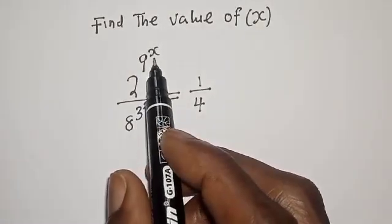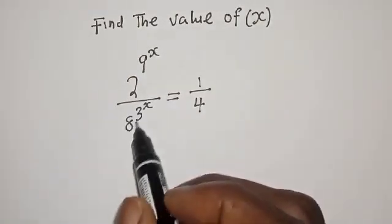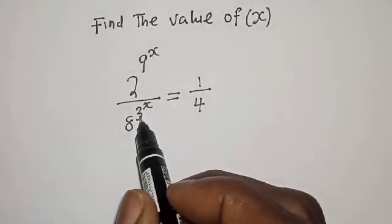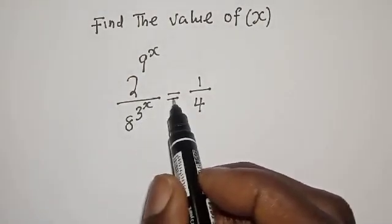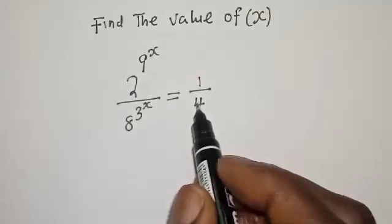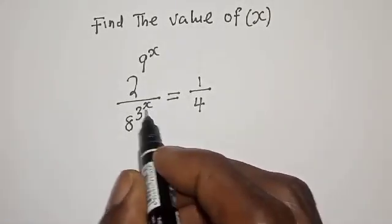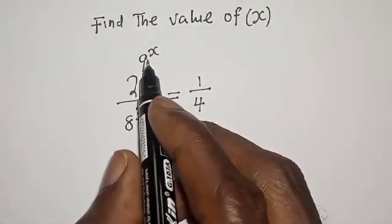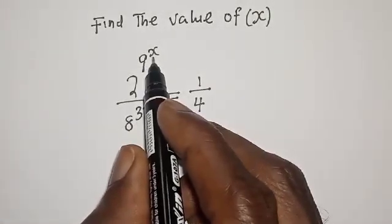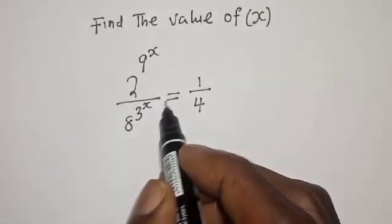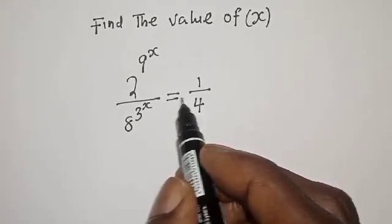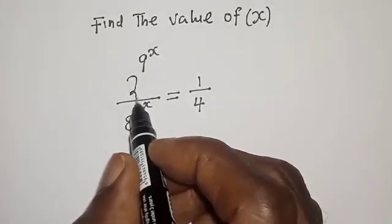2 raised to power 9 raised to power s, divided by 8 raised to power 3 raised to power s, is equal to 1 over 4. What is the value of s? Hi everyone, welcome to my class. In this class, I want to find the value of s from this equation.